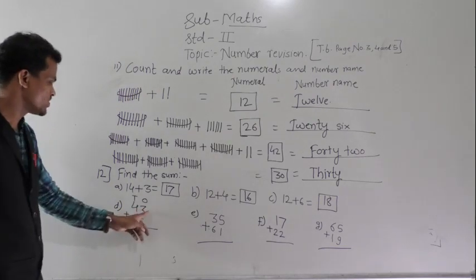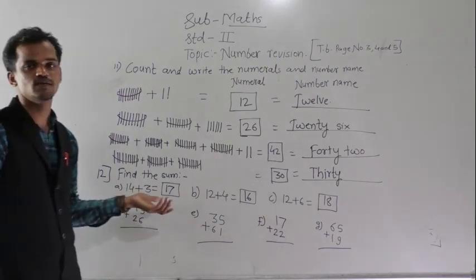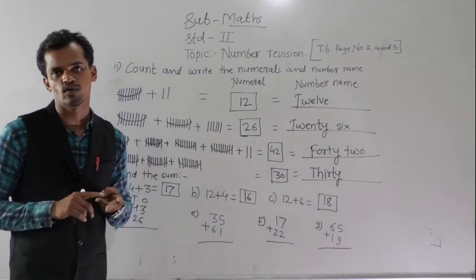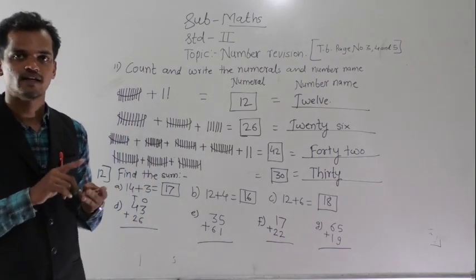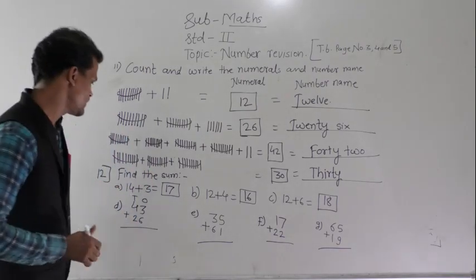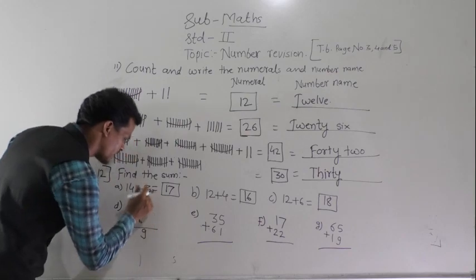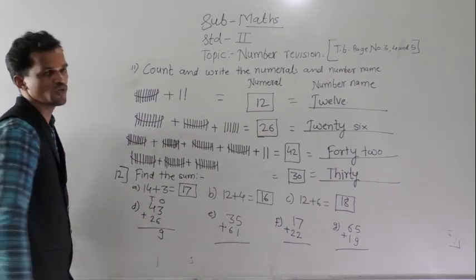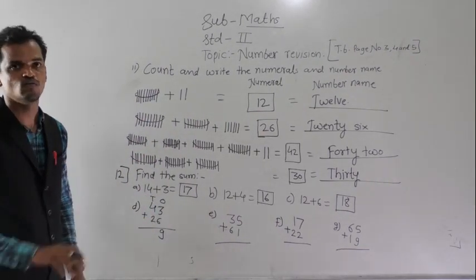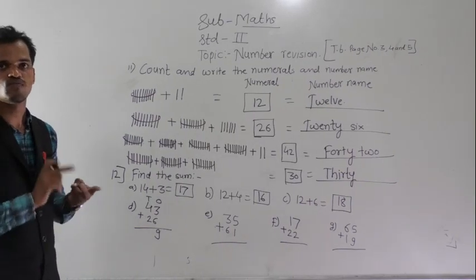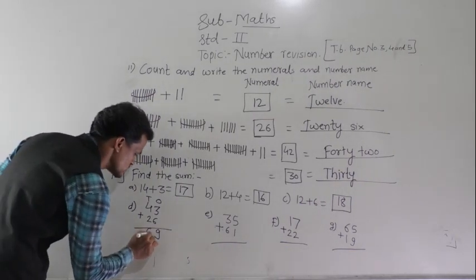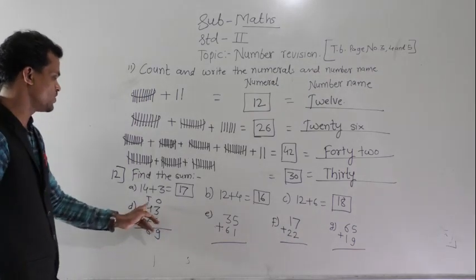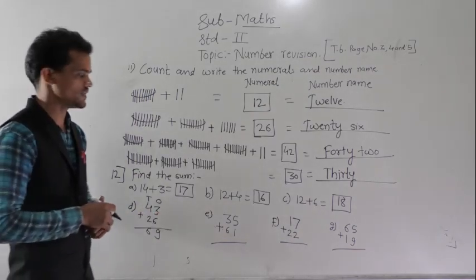Next: 3 plus 6 or 6 plus 3. After 6, count 3 fingers forward: 7, 8, 9. So the ones column gives 9. Then ones column: 4 plus 2 — after 4, count 2 fingers forward: 5, 6. So 43 plus 26 equals 69.